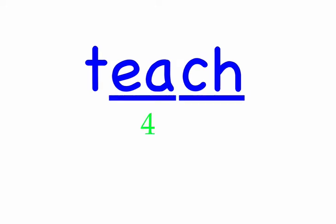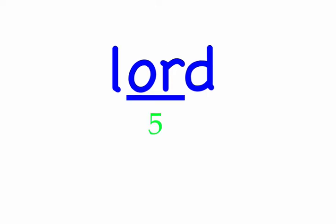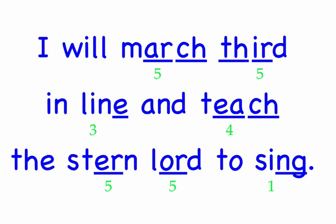The stern. Stern — four sounds: S, T, R, N. Stern. Lord — three sounds: L, O, R, D. Lord. To sing. Sing — three sounds: S, I, N. Sing. I will march third in line and teach the stern Lord to sing.